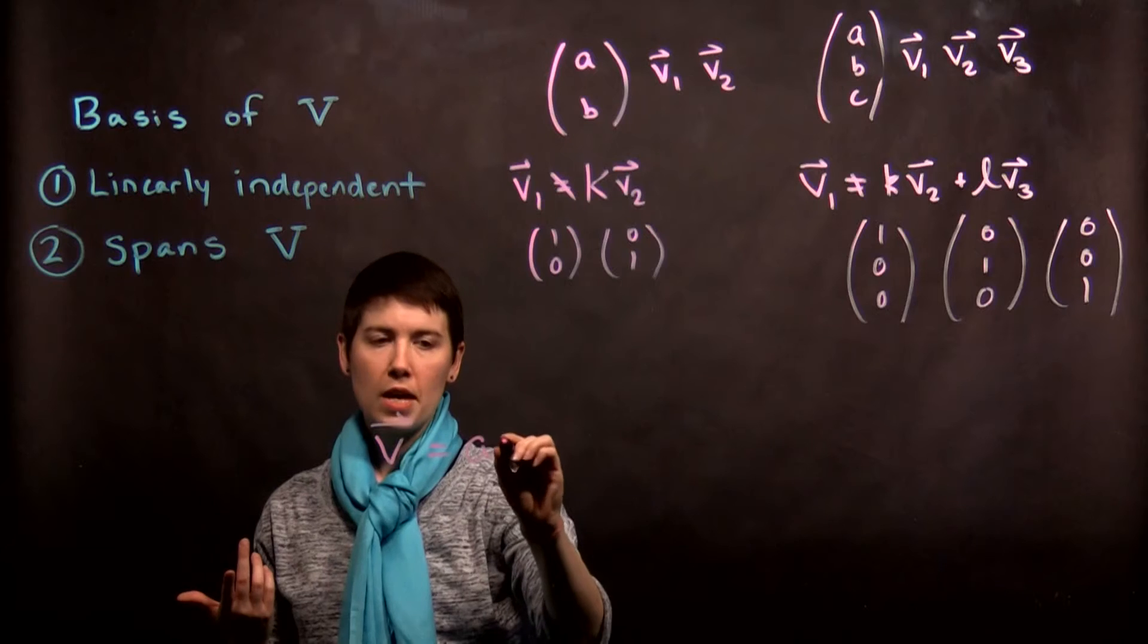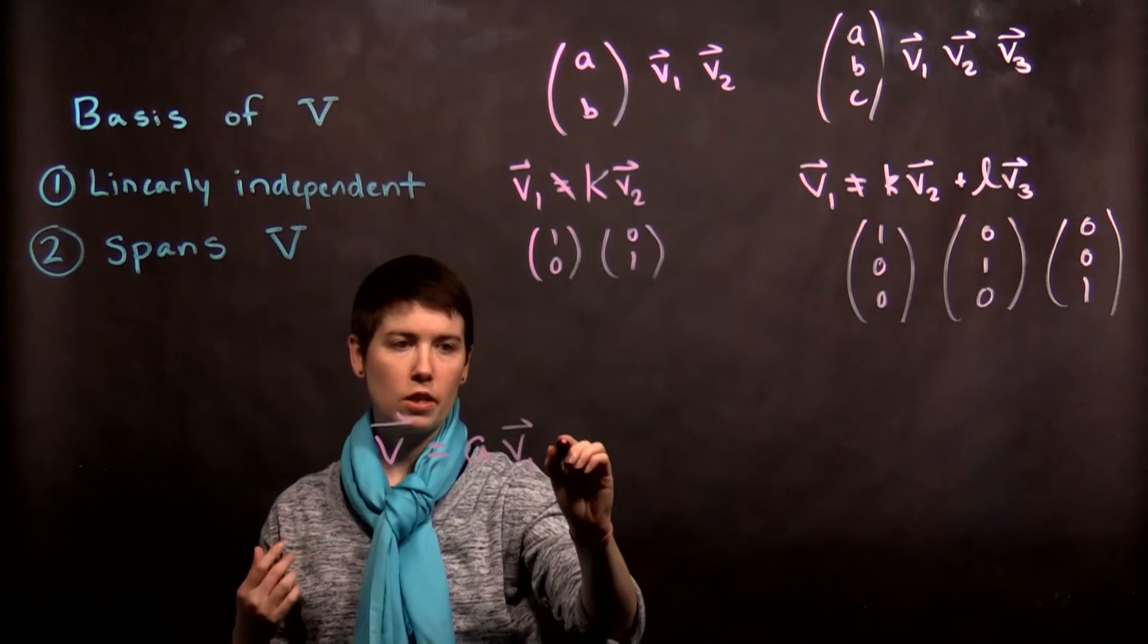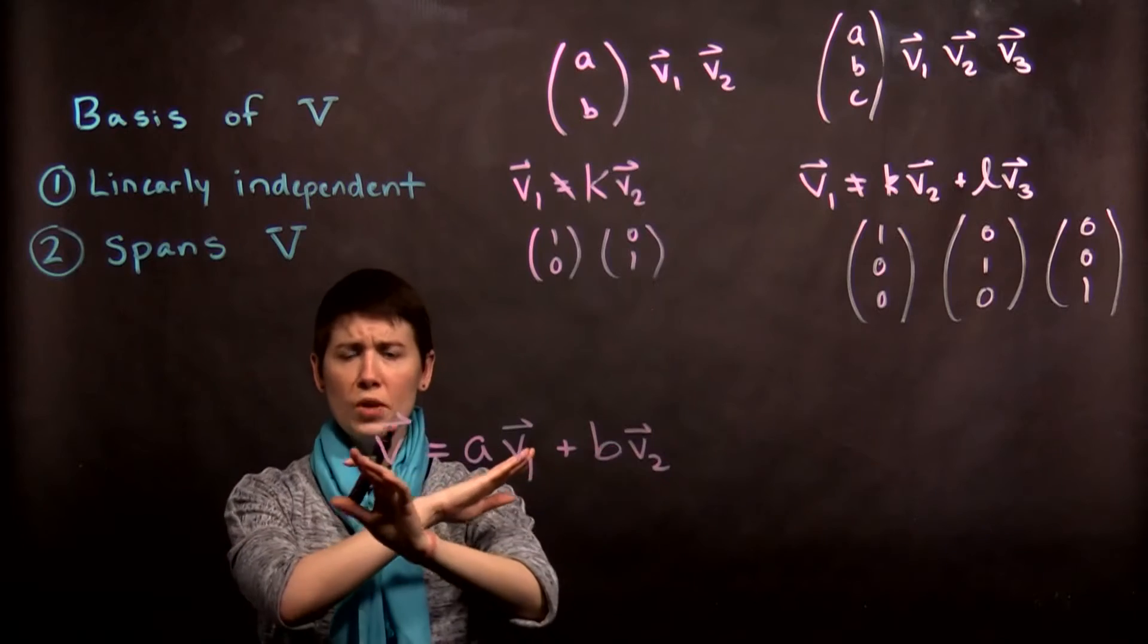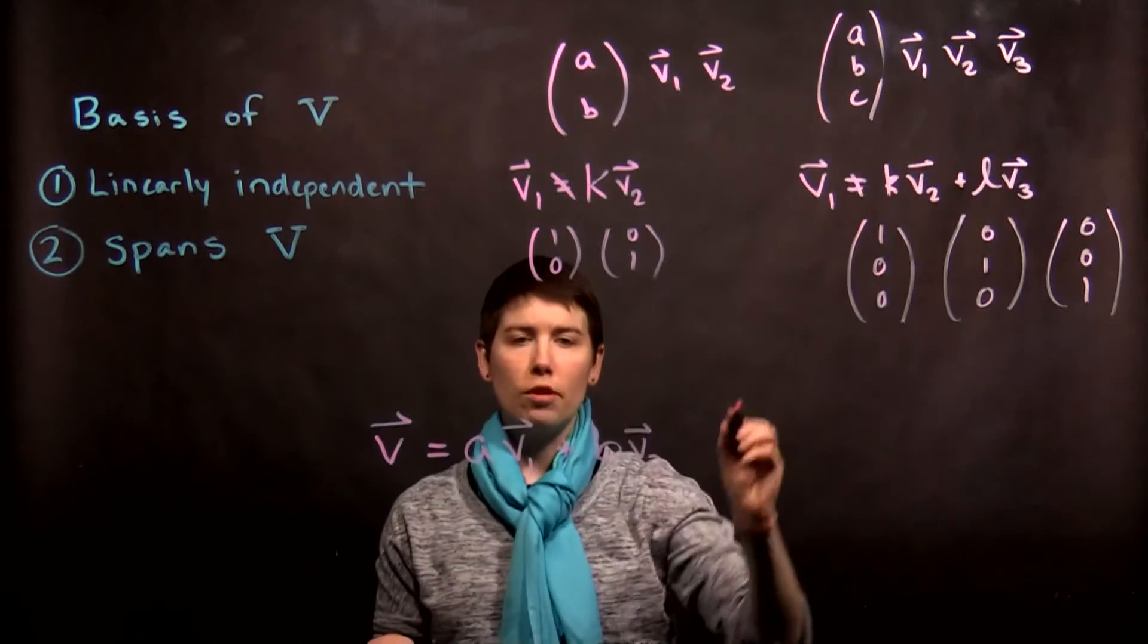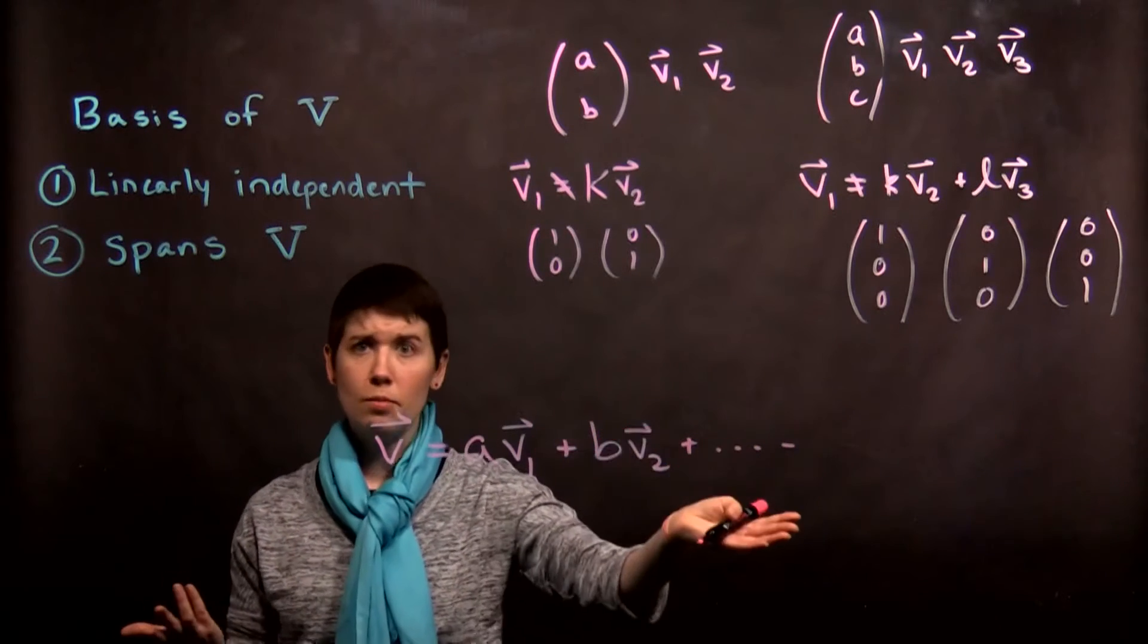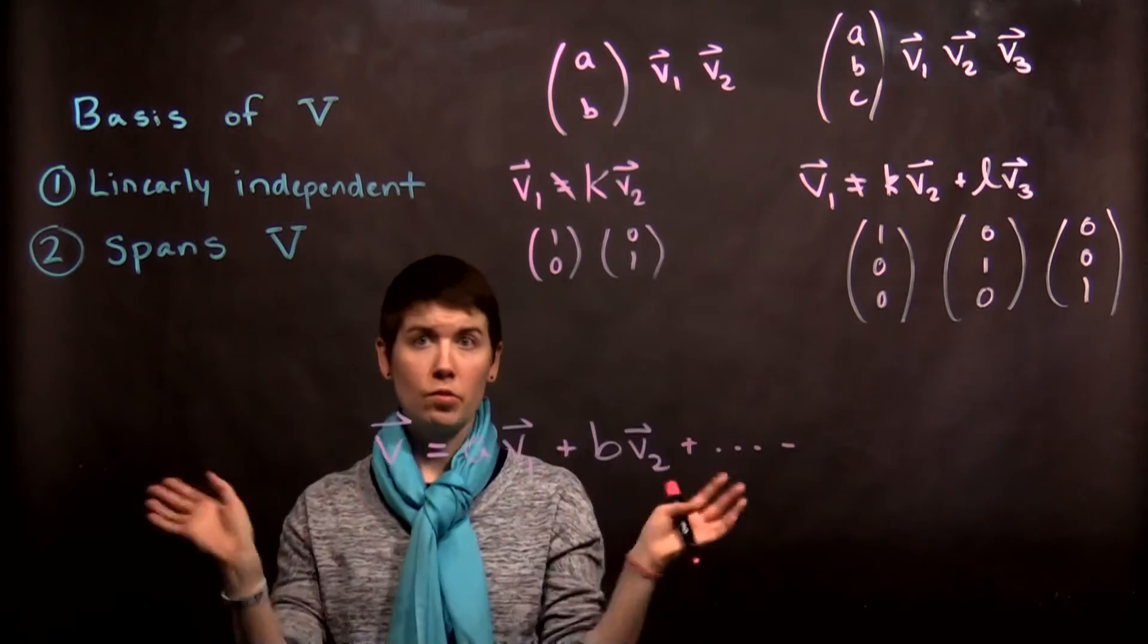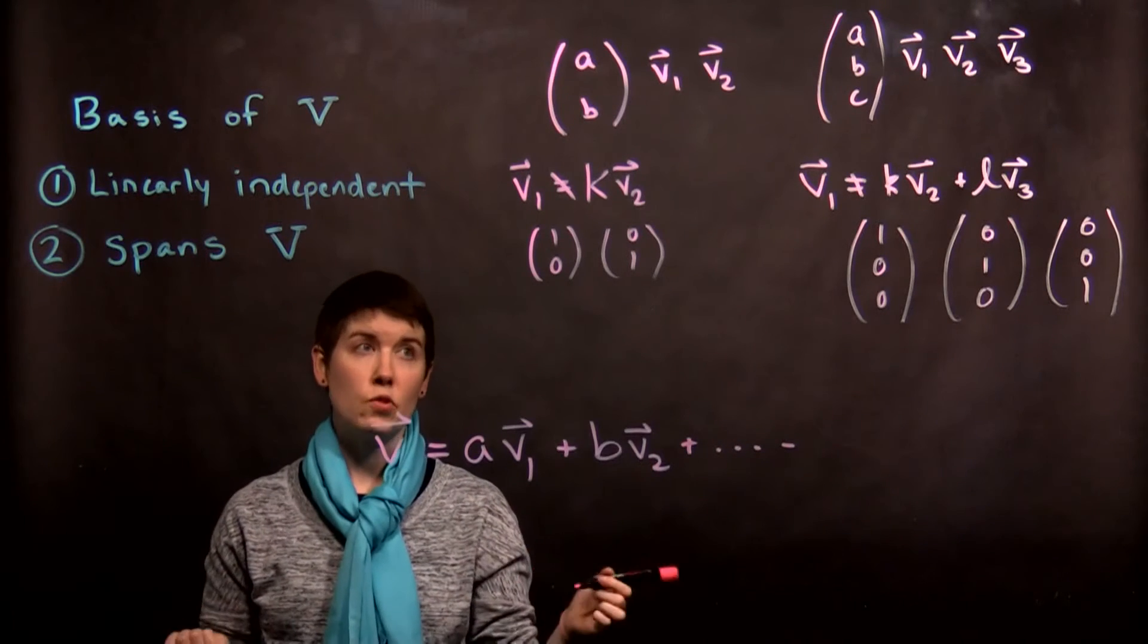That there is a way to make it by a scalar times one basis vector plus a potentially different scalar times that basis vector. So we can do this for anything. And so in general as you have more and more dimensions you're just adding on more and more terms. Now it's possible that some of these are 0, it's possible that some of these numbers are bigger than 1, less than 1, complex. That's all fine. The key is that we can make any vector we want out of a sum.